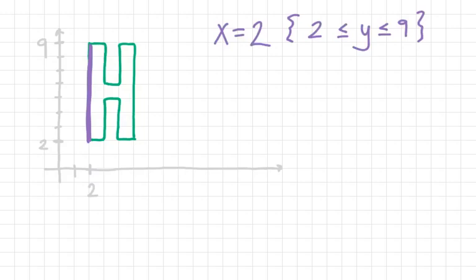Then let's talk about this kind of top piece of my H. That's now a horizontal line. So horizontal lines look like Y equals a number. And the number that I'm going to use is nine because it's again at the top of my H where the Y value is nine.